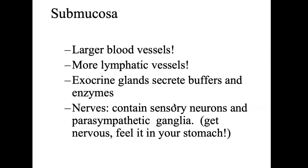Let's go down now into the submucosa. This region has larger blood vessels, more lymphatic vessels, and lots of exocrine glands that are going to secrete buffers and enzymes. A buffer is a substance that is going to be able to neutralize pH and keep it close to seven, not allowing things to be extremely acidic or extremely basic. So these exocrine glands in the submucosa secrete buffers and enzymes, beginning the process of digestion.